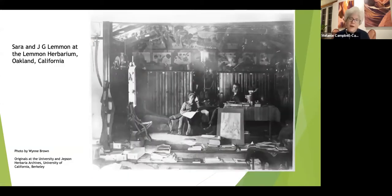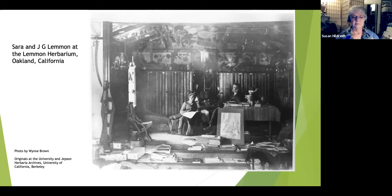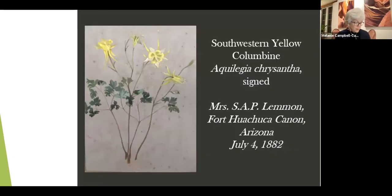Sarah probably made hundreds of paintings of the plants that she and John collected. This photograph of Sarah and J.G. Lemon's herbarium in Oakland, California shows some of them. Few of the paintings have survived, quite likely because of the devastating fires after the 1906 San Francisco earthquake, which gutted the California Academy of Sciences. In that fire, a hundred thousand plant specimens were lost, and Wynn believes from her extensive research that Sarah's botanical paintings may have been housed there. It is so inspirational to be making botanical art in the shadow of the only mountain on our planet named for a botanical artist. Southern Arizona is home to many accomplished botanical artists, and Sue is going to review some of those with us now.